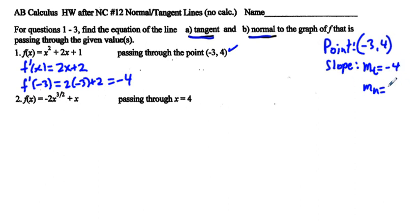Now, the normal line, the slope of the normal line, is the negative reciprocal of the slope of the tangent line. So we're going to say, instead of -4 over 1, we're going to say 1 over 4. Negative reciprocal, so that would be the slope of the normal line.